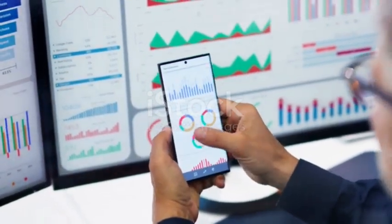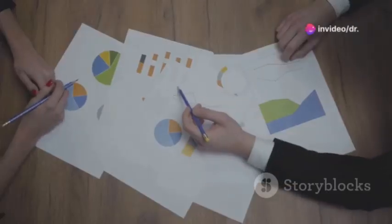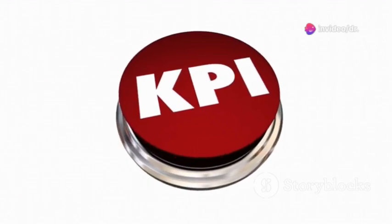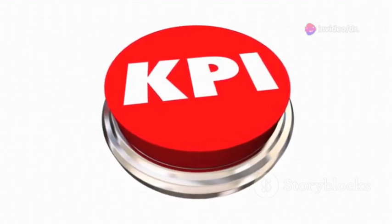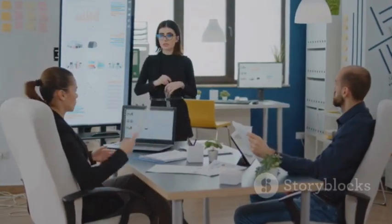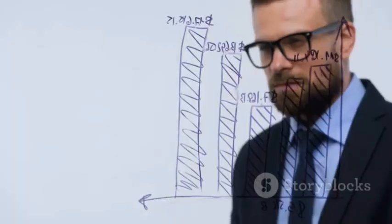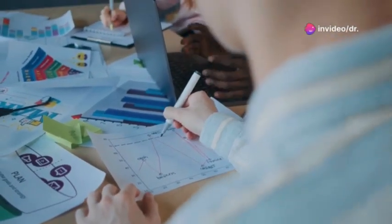Chapter 10: Data Doesn't Lie - Track, Analyze, Optimize. You can't improve what you don't measure. We're talking KPIs, performance dashboards, the whole nine yards. Track your progress, analyze the data, and identify areas for improvement. This isn't a one-time thing. It's an ongoing process. The market is constantly shifting, so you need to be agile and adapt based on what the data tells you. This is how you stay ahead of the curve and crush the competition.